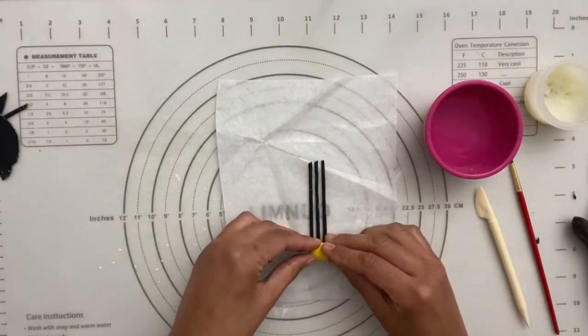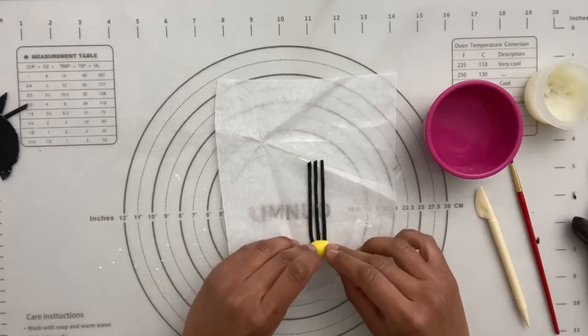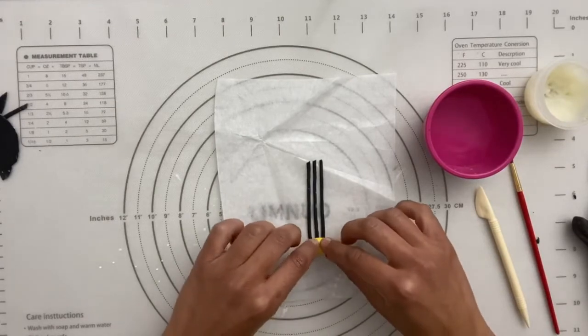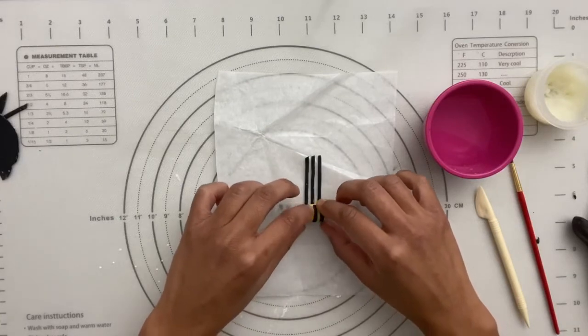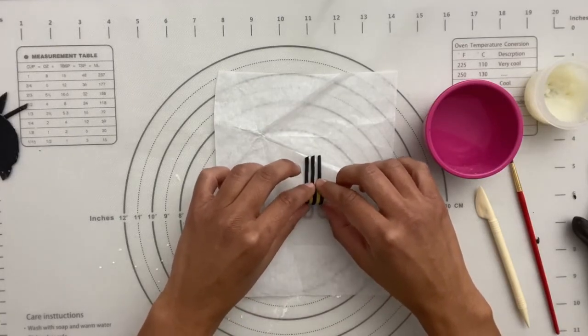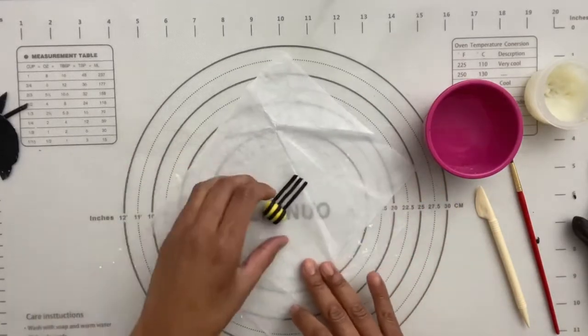And then I'm going to trim one of the sides so that they're all even. Then start with the bottom of your bee. And you're just going to center them on the stripes. And then you're just going to roll them along until he meets up again.